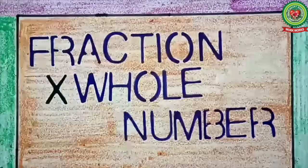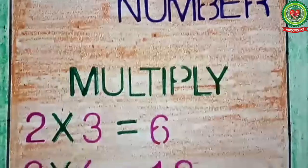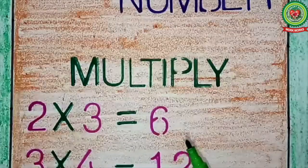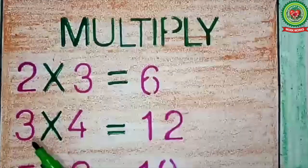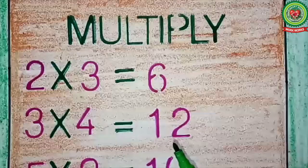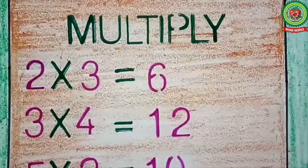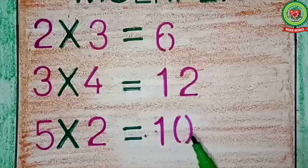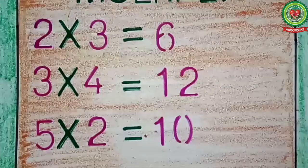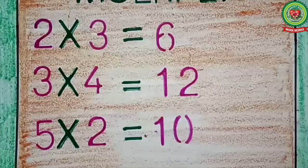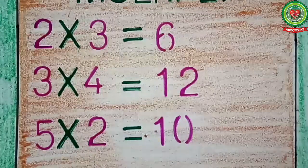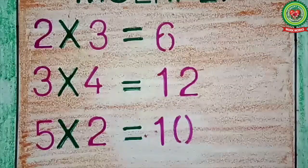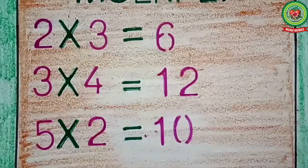So here if I ask you 2 multiplied by 3, you will answer 6. 3 times 4, answer is 12. 5 times 2, answer will come 10. Here we are multiplying whole number by a whole number.